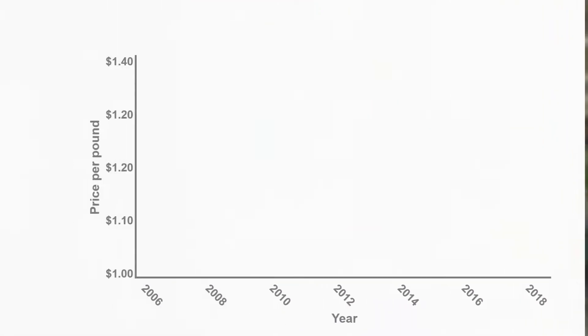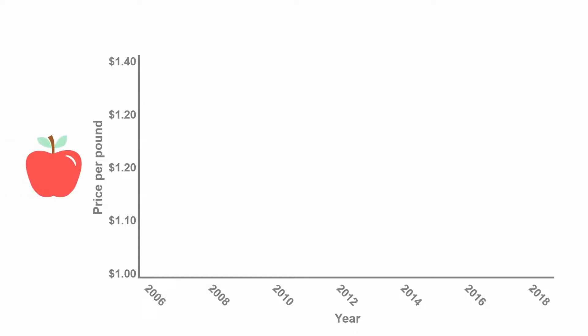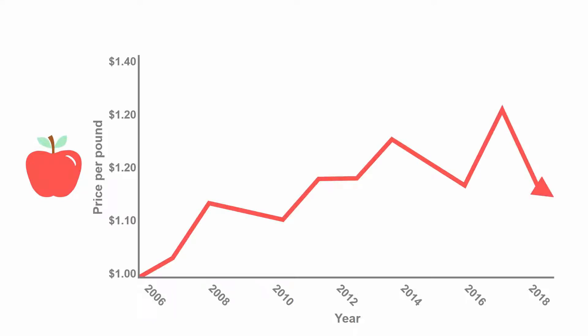If the opposite had happened — say instead that the price of the apples had dropped — this would be an example of de-escalation. Take a look at the observable prices of apples over time. You can see that the price per pound rises.